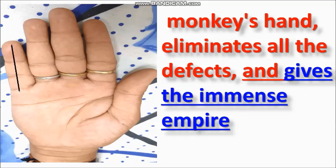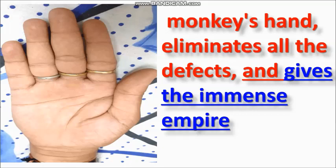This Mercury finger is just reaching the Apollo first flange — here, this is the first flange of Apollo — and this Mercury finger reaches the Apollo first flange or even slightly more than that. This is a very good sign for doing business, because Mercury shows your business ability, good command in communication, calculation, and everything related to business.